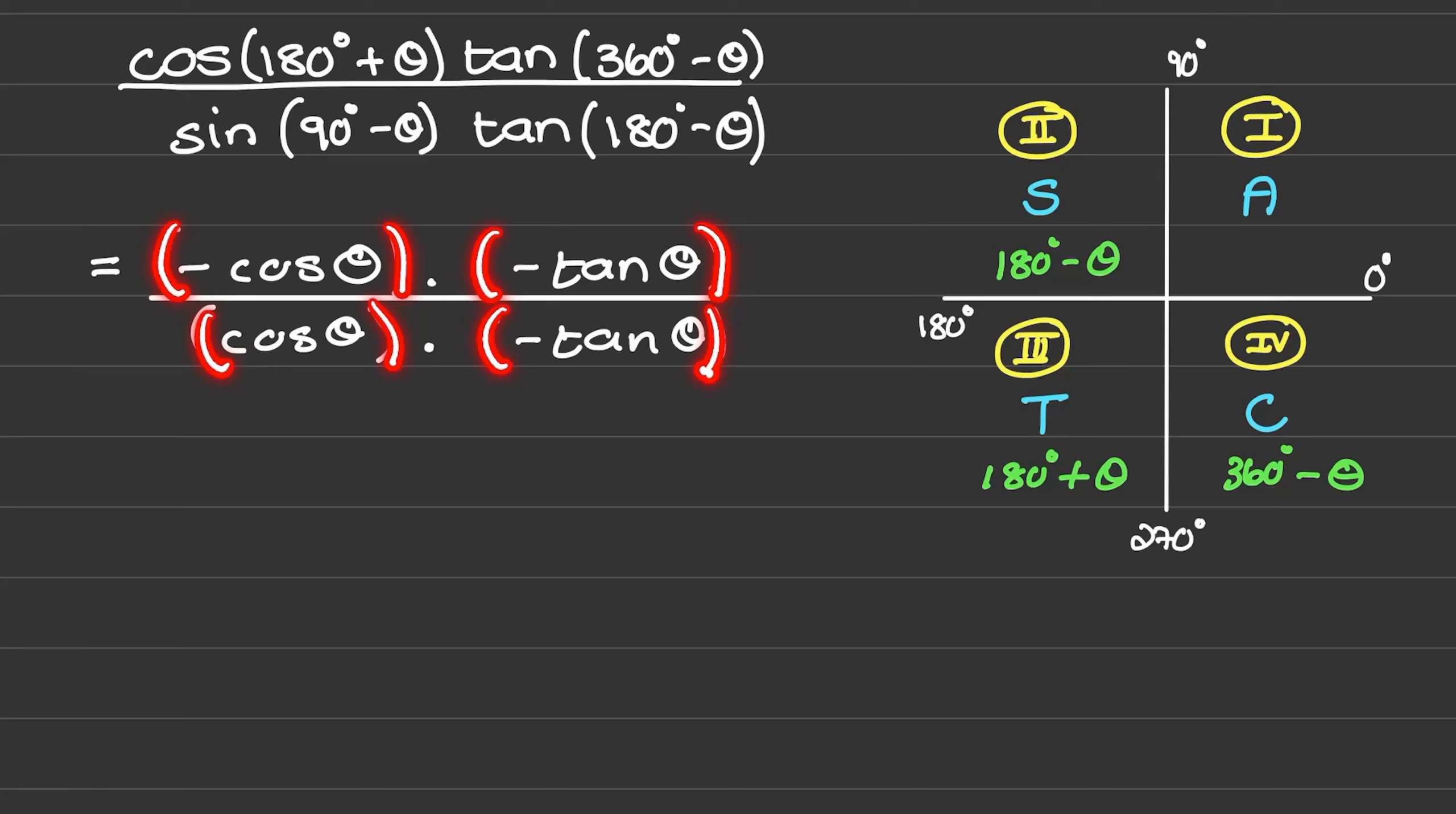Notice that for all the reductions we use brackets to show our changes. Otherwise we can easily write it as negative cos minus tan theta in the denominator, where we ignore the multiplication of these terms. So it's better to use brackets to help us avoid unnecessary mistakes.